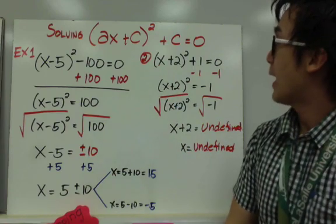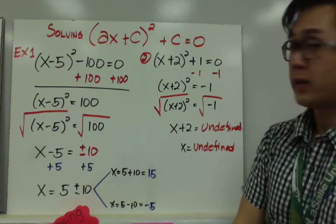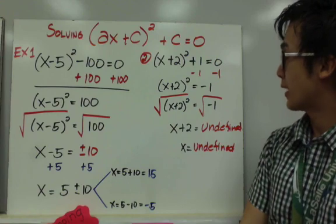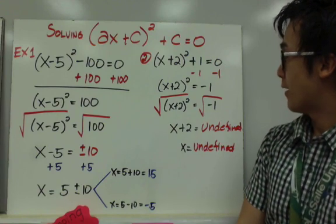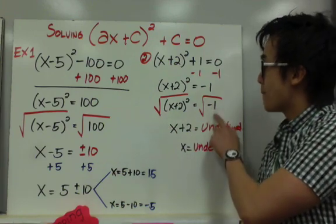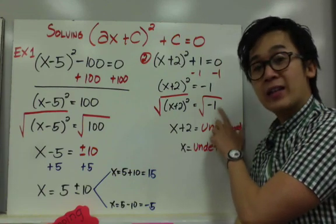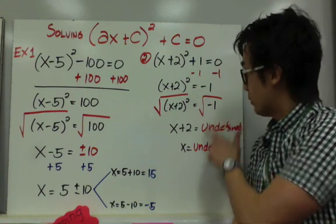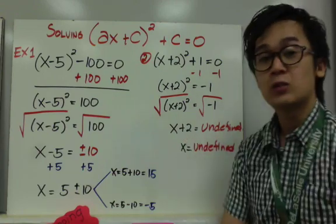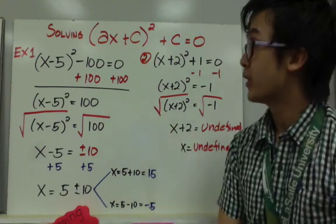For example number 2, we have the quantity x plus 2 squared plus 1 equals 0. We subtract 1 from both sides to get the quantity x plus 2 squared equals negative 1. Taking the square root of both sides, we have a negative 1 inside the square root. Since the square root of a negative number is undefined, even adding 2 on both sides will not change that. So our answer is undefined.